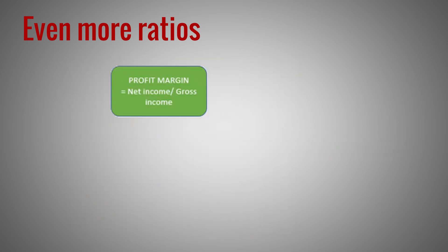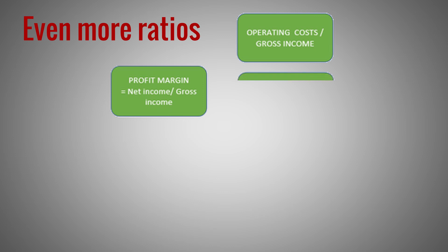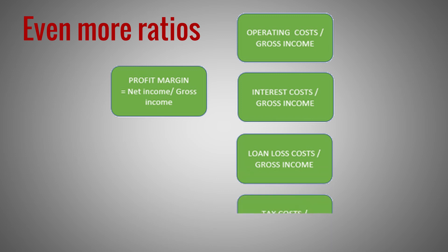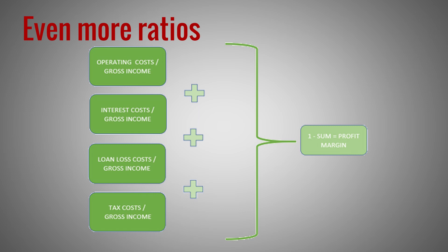The counterpart of this revenue analysis is of course the cost breakdown. Here we turn to the profit margin, which shows how the financial institution is managing its costs. We introduce the following ratios: (1) operating costs over gross income, (2) interest costs over gross income, (3) loan loss costs over gross income, and (4) tax costs over gross income. These represent the major costs that financial institutions incur, and the model offers flexibility to add other expenses. A nice feature of this cost-over-revenue approach is that the sum of these costs plus the profit margin adds up to the bank's total gross income. Since all the ratios share gross income as their denominator, the ratios add up to 1 or 100%. So, 1 minus the sum of the cost-over-gross-income ratios equals the profit margin.